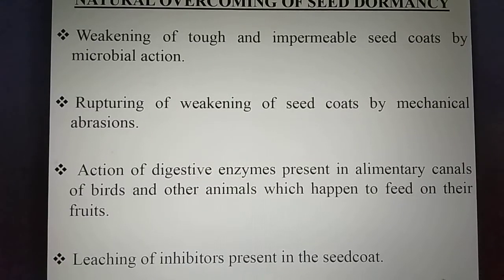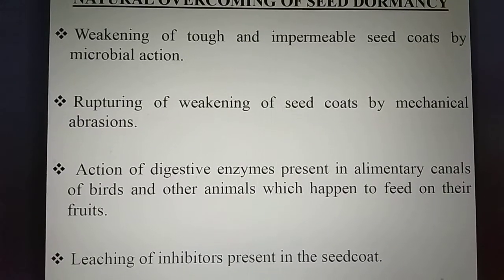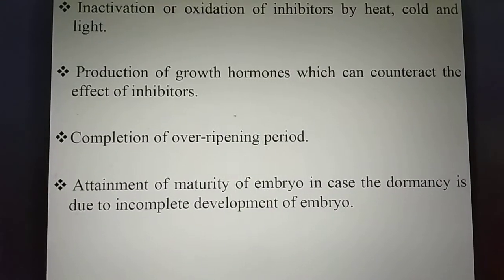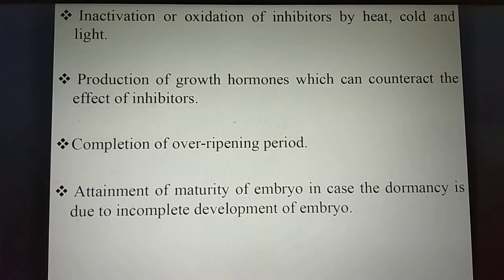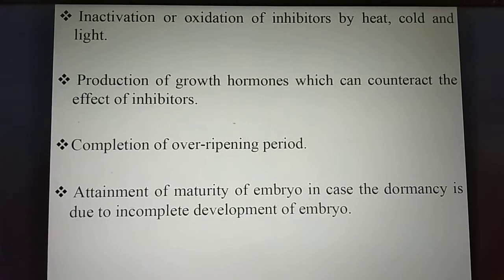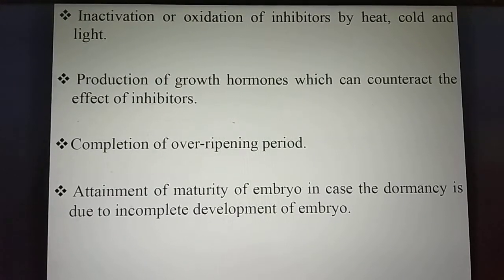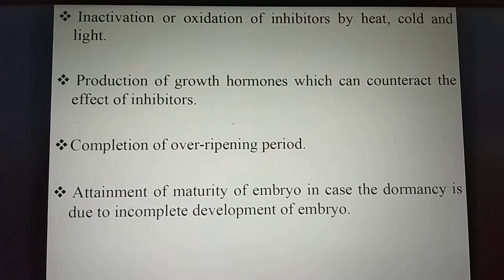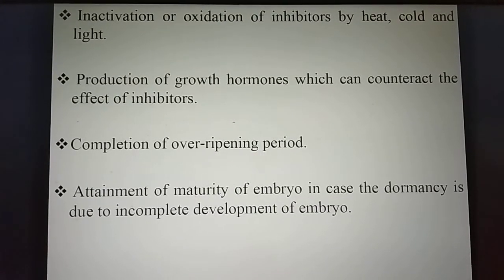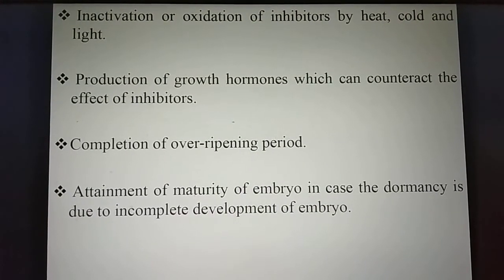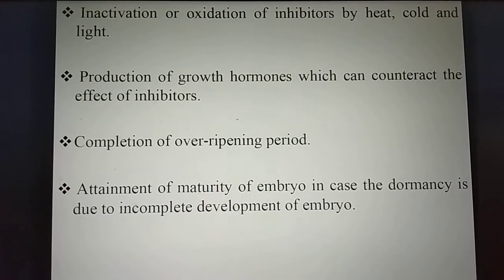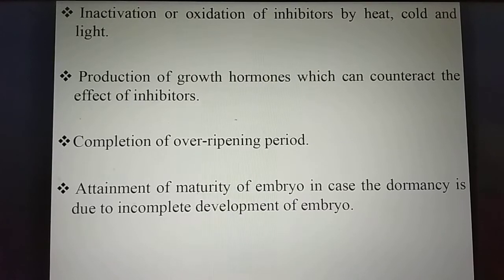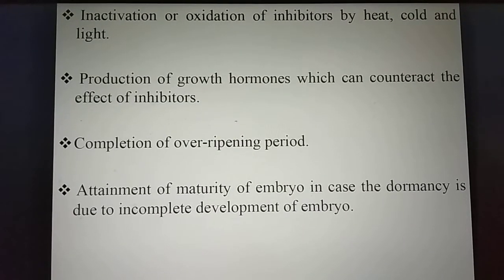Leaching of inhibitors present in seed coats. Inactivation or oxidation of inhibitors by heat, cold, and light. Production of growth hormones which can counteract the effect of inhibitors. Completion of over-ripening period. Attainment of maturity of embryo, in case the dormancy is due to incomplete development of the embryo.